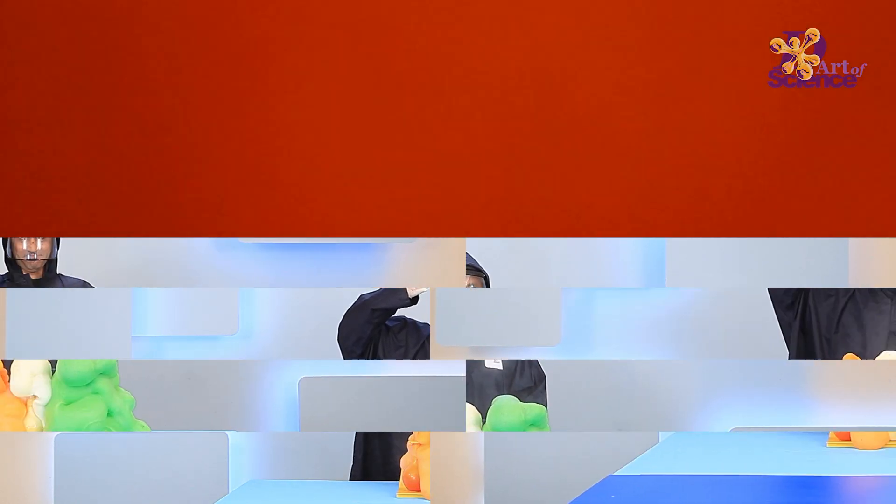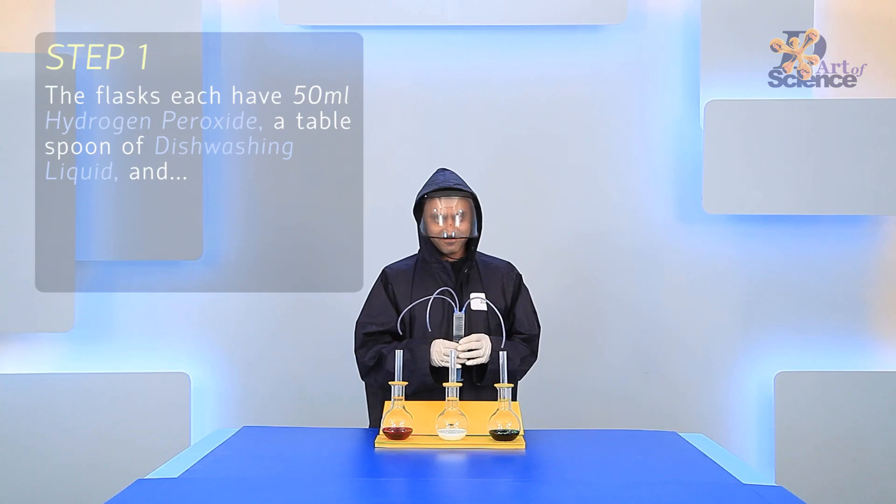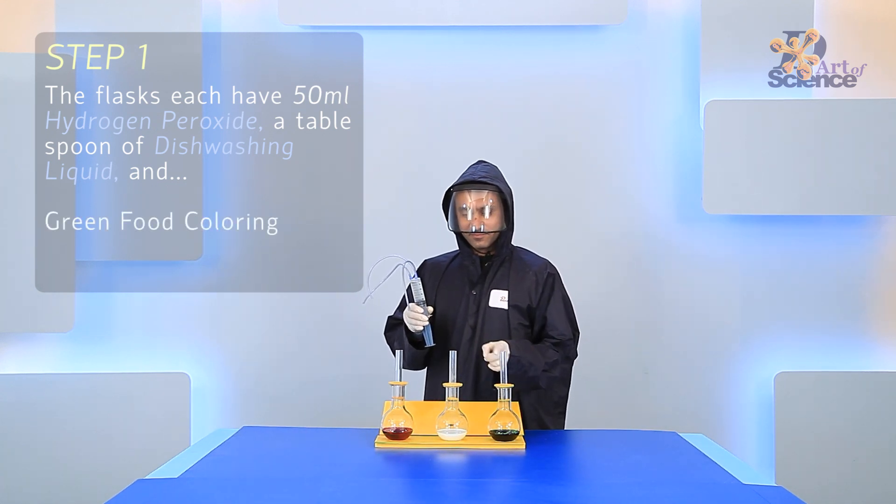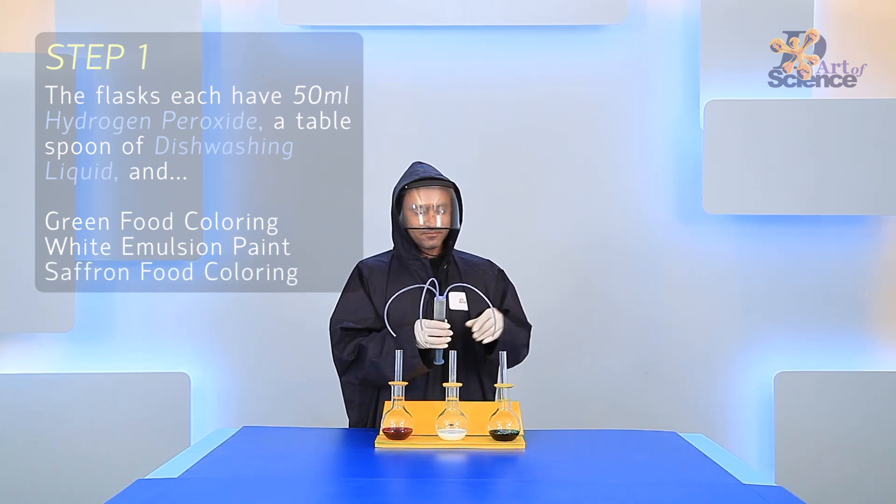Look at that! The hydrogen peroxide is breaking down into water and oxygen gas. The oxygen gas gets trapped in the dish soap, creating this monstrous foam mountain. This reaction is exothermic, which means it releases heat energy.